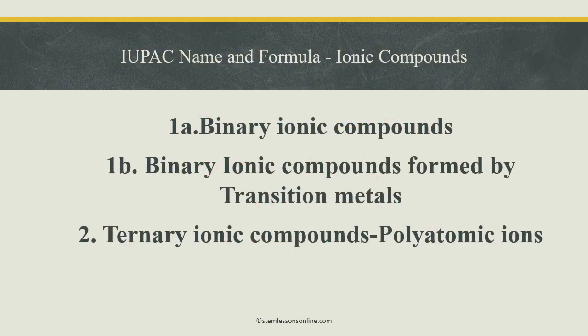While naming ionic compounds, we have to categorize them into three types so that we learn the rules separately. The first one is binary ionic compounds. The second one is binary ionic compounds formed by transition metals. And the third one is ternary ionic compounds, which involve polyatomic ions. In this lesson, I am talking only about the binary ionic compounds.